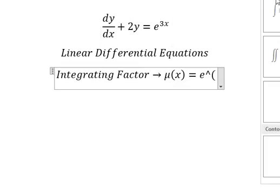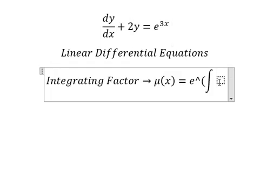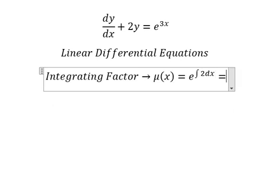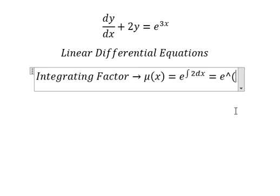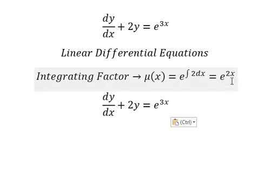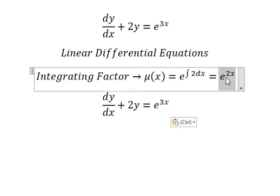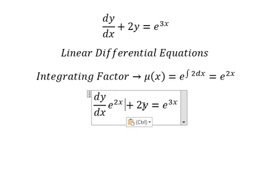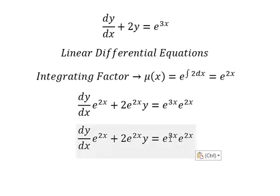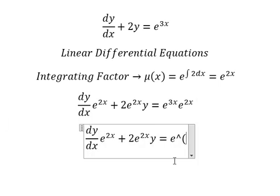And we have the integration of 2 ds, which gives us e to the power of 2s. That means we need to multiply both sides by this integrating factor. So we can simplify and we have e to the power of 5s.